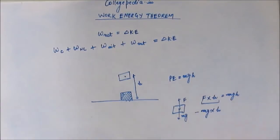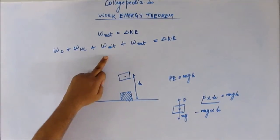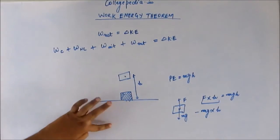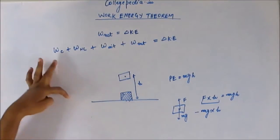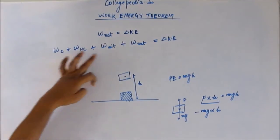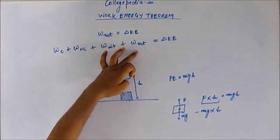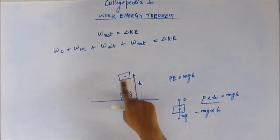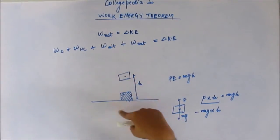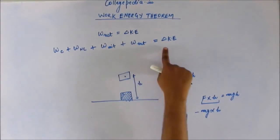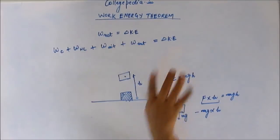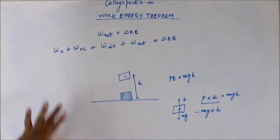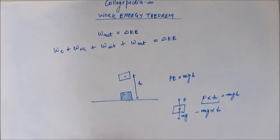Net work done — work done by the internal or conservative force (gravitational) plus work done by the external force — is zero. So the kinetic energy acquired by the block is zero, meaning the change in kinetic energy is zero. The equation is telling the truth.